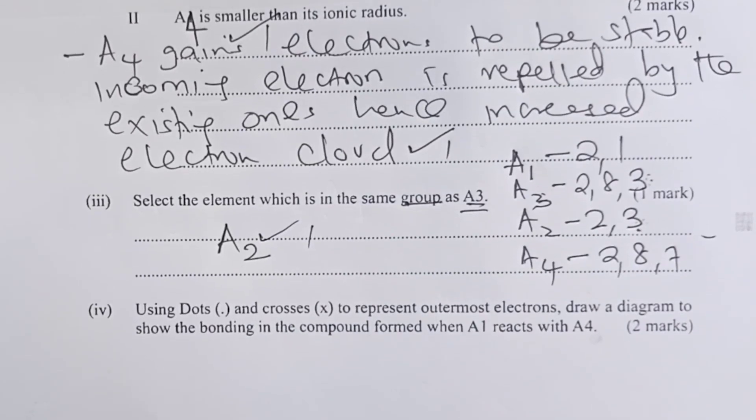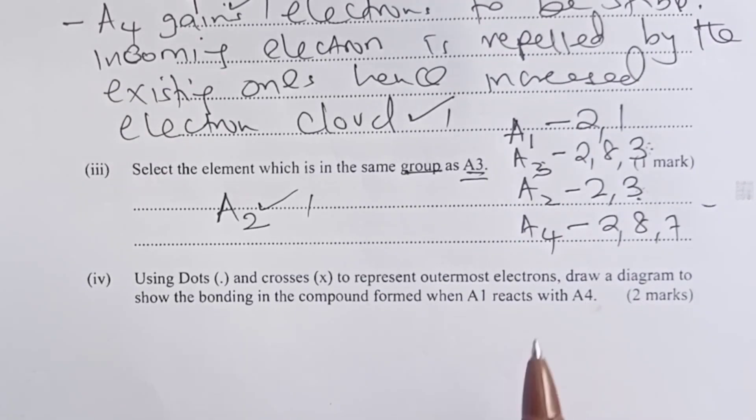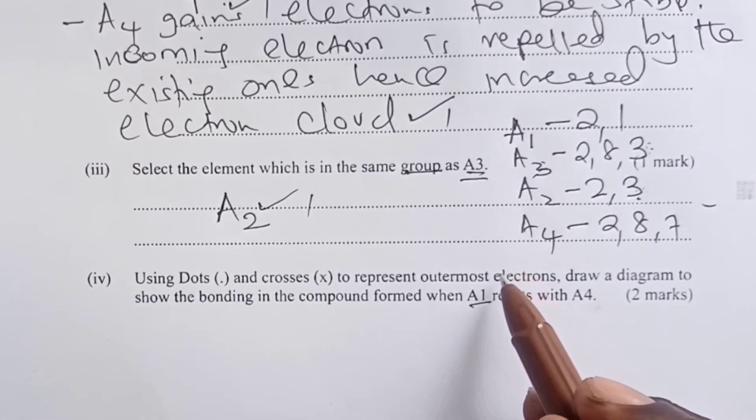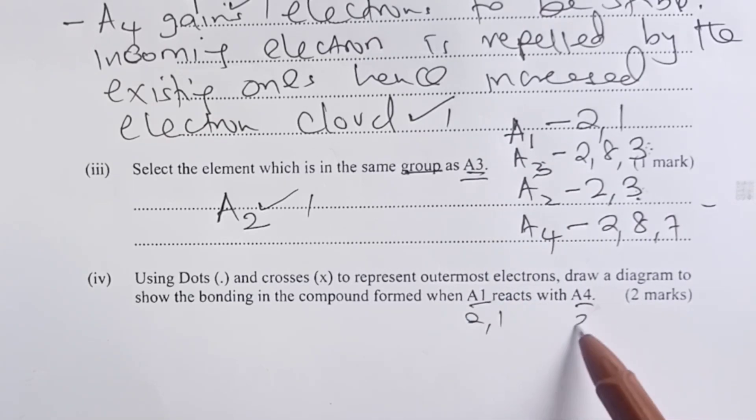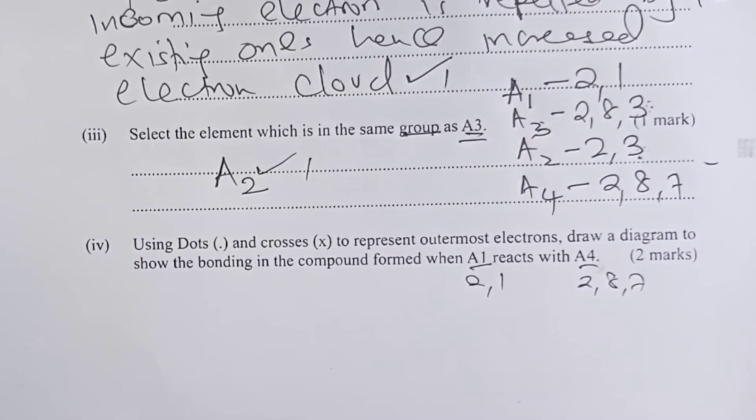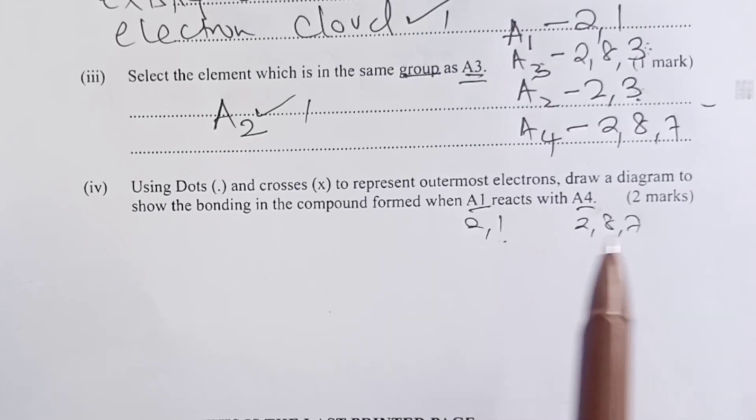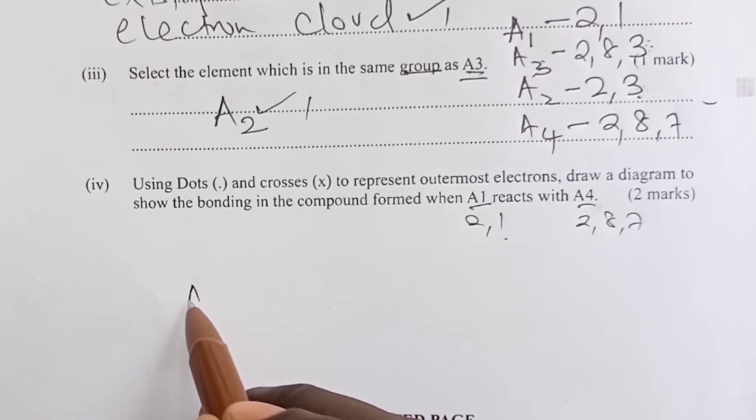Finally, we are told to draw dot and cross diagram to represent bonding between A1, this is 2,1, and A4, 2,8,7. So obviously, the kind of bond we expect here is ionic. A1 losing its only outer electron to A4. So we shall have the nucleus of A1, and then we show that on the outermost level we shall only remain with two electrons.